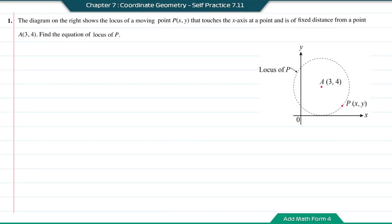Self-practice 7.11, question number 1. The diagram on the right shows the locus of a moving point P that touches the x-axis at a point and is of fixed distance from a point A(3,4). Find the equations of the locus of P.